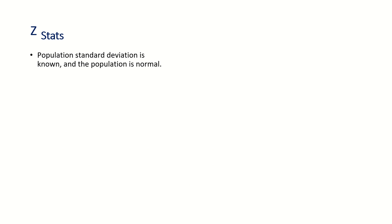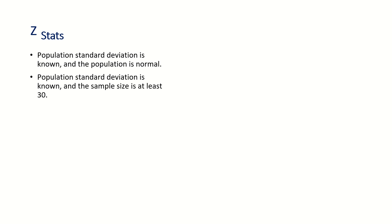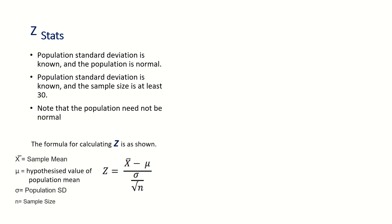Z test is used when the population standard deviation is known and the population is normal, or when the population standard deviation is known and the sample size is at least 30 — note that the population need not be normal in that case. The formula for calculating Z is: Z statistic, or Z calculated, equals X-bar minus mu, divided by sigma divided by root n.